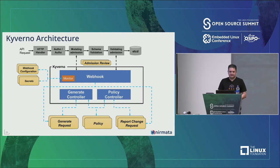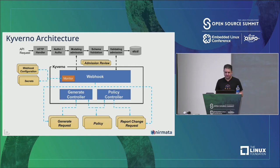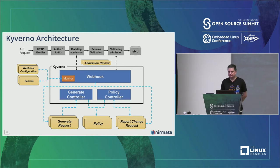Looking under the covers: Kyverno has multiple controllers running as a single workload. Kyverno automatically registers itself as a webhook, receiving both mutating and validating webhook requests. Based on policies maintained in memory as a cache, it dynamically applies mutation, automatic resource generation, and validation. If you change any policy in real-time, Kyverno automatically updates. It also performs background scans on all existing resources and reports those results.